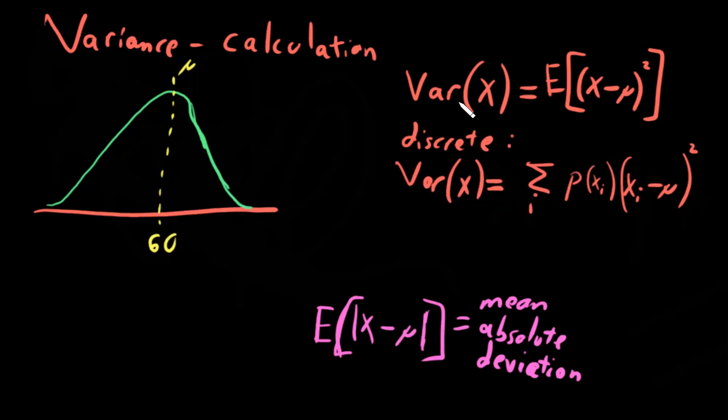Variance, believe it or not, is a more specific form of a general, a more general idea called covariance. Now we're not going to go into the details here, but covariance is how one random variable co-varies with another, whether they are moving together, changing together, and changing not together. The higher the covariance, the tighter two variables change together.